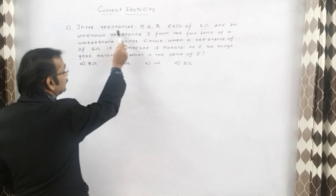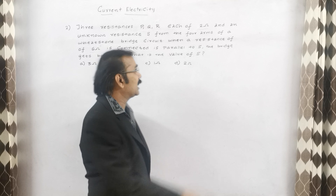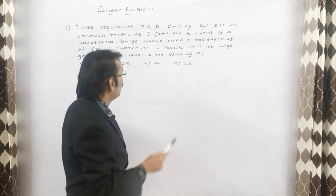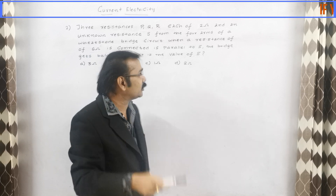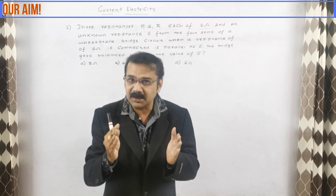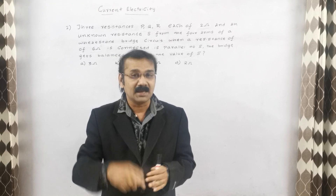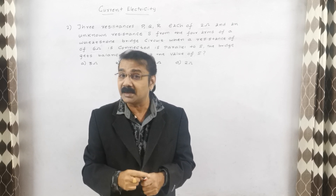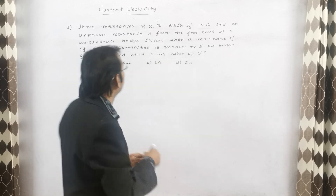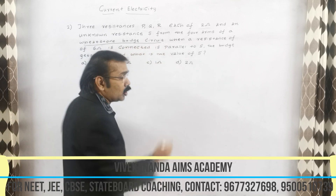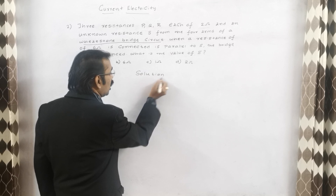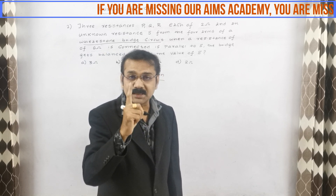See this second question: three resistances P, Q, R are each of 2 ohms and an unknown resistance S form the four arms of a Wheatstone bridge. When a resistance of 6 ohms is connected in parallel to S, the bridge gets balanced. What is the value of S? In this question, he has very clearly given a Wheatstone bridge. You know how to write the Wheatstone bridge — let us go for the solution.